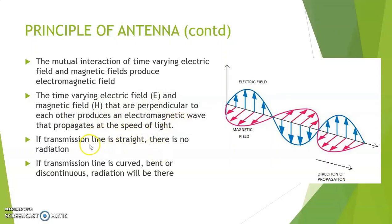If the transmission line is straight, there will be no radiation, but if the transmission line is curved, bent, or discontinuous, then there would be radiation.